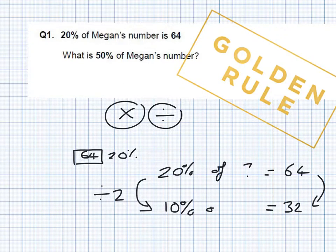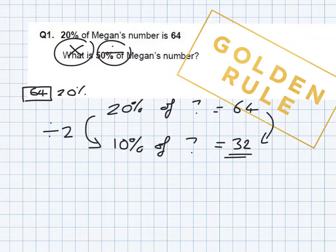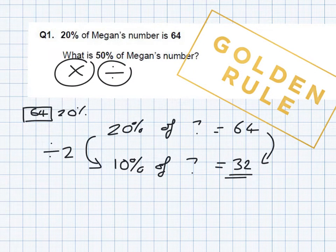So 10% of my number is now 32. We'll just move this up here so it's out of the way a little bit. So we know 10% of the number but we don't want 10% of the number. We look at the question.